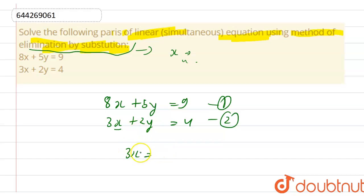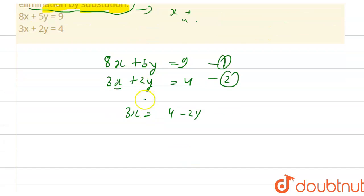So 3x will be equal to 4 minus 2y, so x will be equal to 4 minus 2y divided by 3. Now we have the value of x from the second equation.